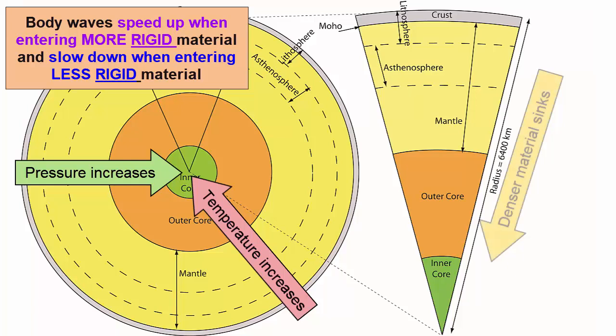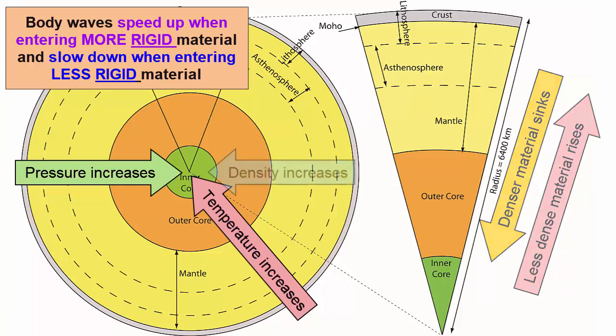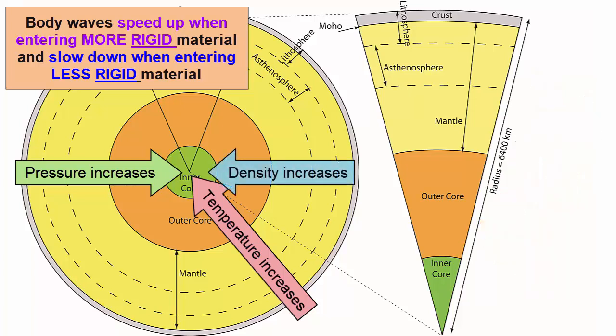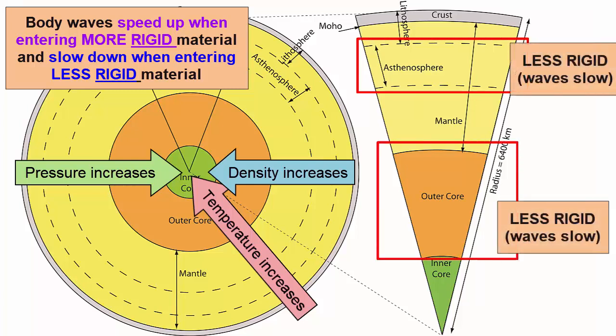For example, we know that denser things sink and less dense things rise, so each layer we cross through as we travel deeper into the Earth will be denser than the layer above and less dense than the one below. However, being more dense doesn't necessarily translate to being more rigid. When body waves slow down as they enter the asthenosphere or outer core, they are still entering something more dense, just less rigid, because the asthenosphere is plastic and the outer core liquid.